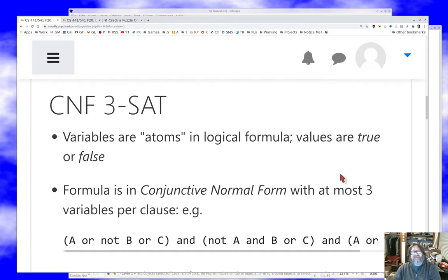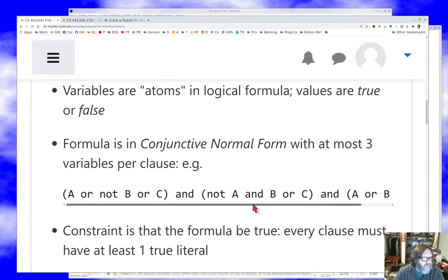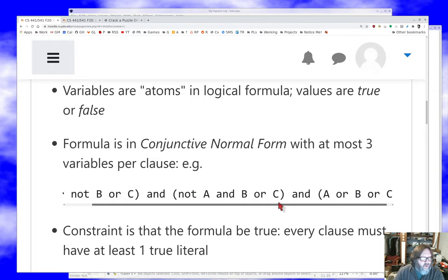The classic constraint satisfaction problem is 3SAT, three clause normal form, conjunctive normal form, three satisfiability. So remember from your discrete math background, this idea of propositional logic, the idea that I have variables that are atoms in logical formulas, they can be either true or false, and I have some formula. And here I'm going to put the formula in what's called conjunctive normal form. The ORs are going to be inside what are called clauses, and the ANDs are going to join clauses. And so this is a conjunctive normal form formula.